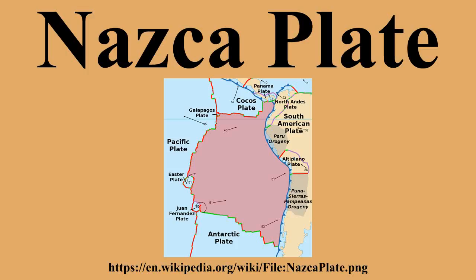Geologic history: The precursor of both the Nazca Plate and the Cocos Plate was the Farallon Plate, which split in the late Oligocene, about 22.8 Ma, a date arrived at by interpreting magnetic anomalies. Subduction under the South American continent began about 140 Ma, although the formation of the high parts of the central Andes and the Bolivian Orocline did not occur until 45 Ma. It has been suggested that the mountains were forced up by the subduction of the older and heavier parts of the plate, which sank more quickly into the mantle.